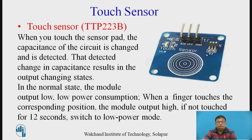We will discuss one of the easily available touch sensors, the TTP223B. When you touch the sensor pad, the capacitance of the circuit is changed and detected. In the schematic, you will see the touch pad is provided here. When you touch this particular pad, its internal capacitance will change, and this change in capacitance is detected and the output is provided.